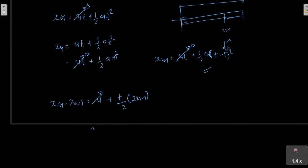The graph x versus a by 2 times (2n minus 1) - these are all constant things, so the graph is directly proportional to time t.